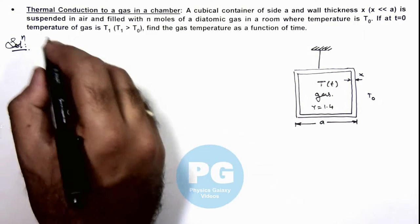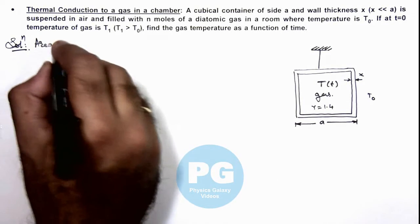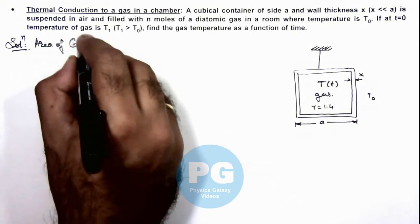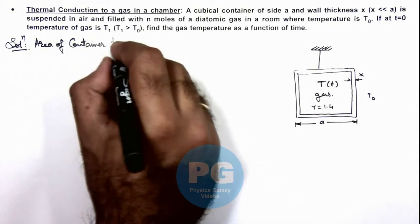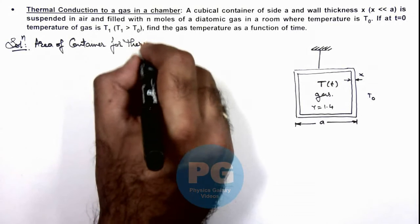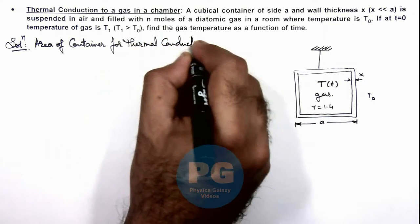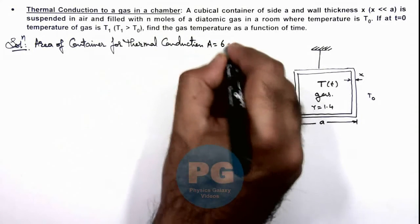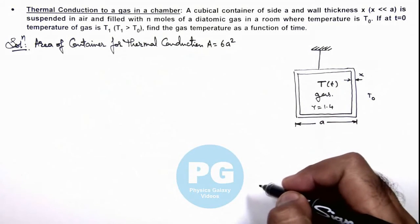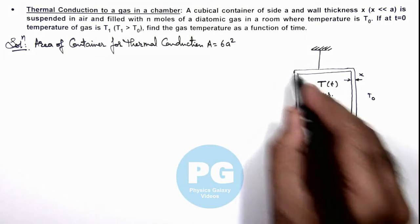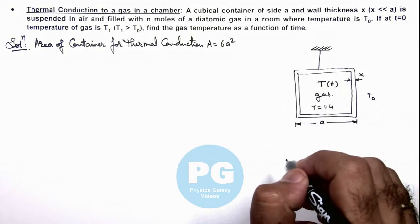So here we can analyze area of container for thermal conduction. This we can simply write as 6a² because for the cube, the chamber is suspended in a room, that means conduction will take place through all the walls of this cubical container.